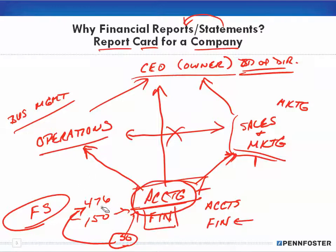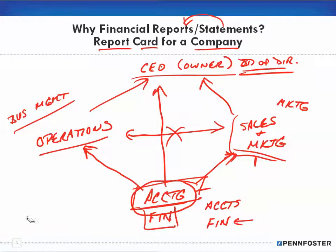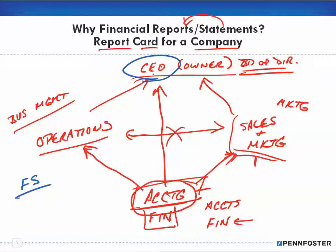So we have financial statements being created, and everything that happens in a business is turned into numbers. Those numbers are then looked at in order to make determinations as to what directions to take and what actions need to be taken. For example, let's say in sales and marketing, last year there was $100,000 in sales.